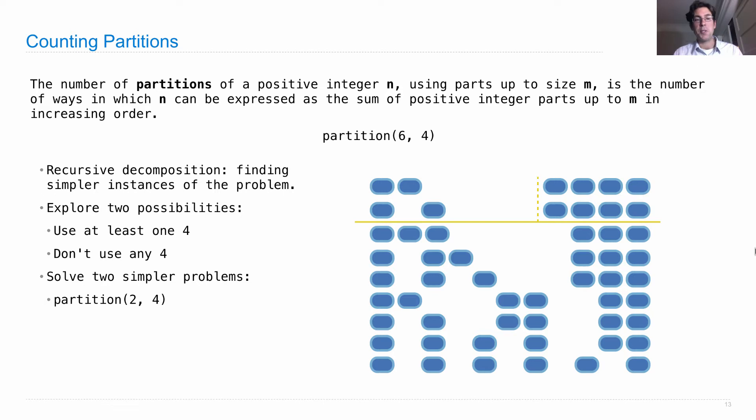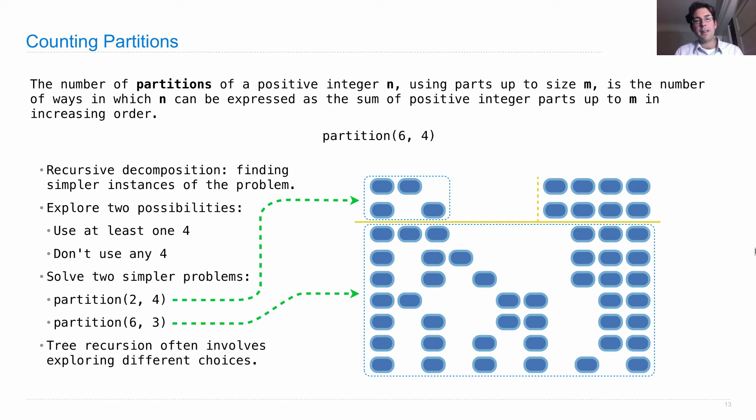One is, we'll partition 2 using pieces up to size 4. Now, of course, you can't take 4 out of 2, but you can use either 2 alone, or 1 plus 1. And then, below the line, those are all the ways of partitioning 6 using parts of size 3 or less. So that's partition 6, 3. So partition 2, 4 is counting up everything in that circle, and partition 6, 3 is counting everything below the line.